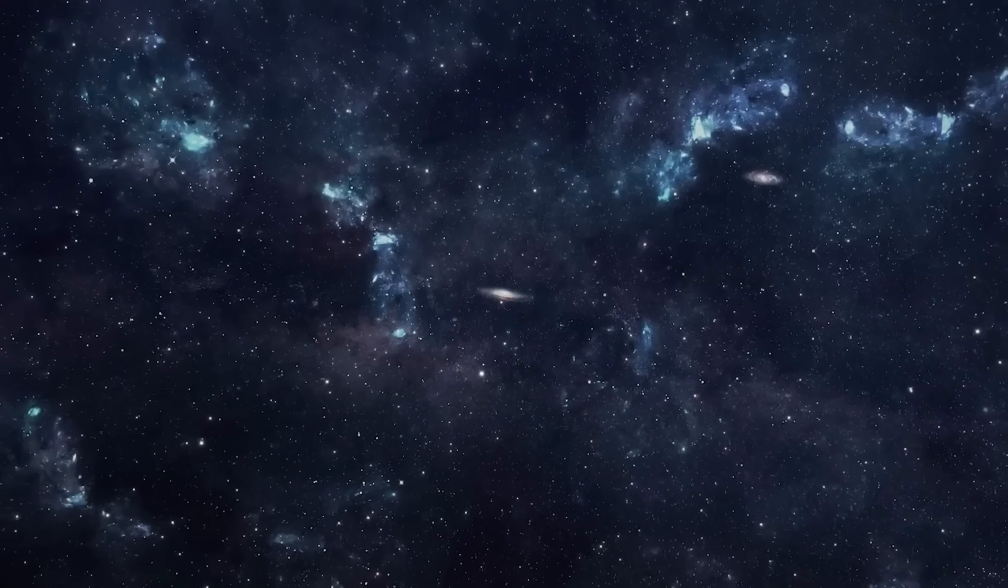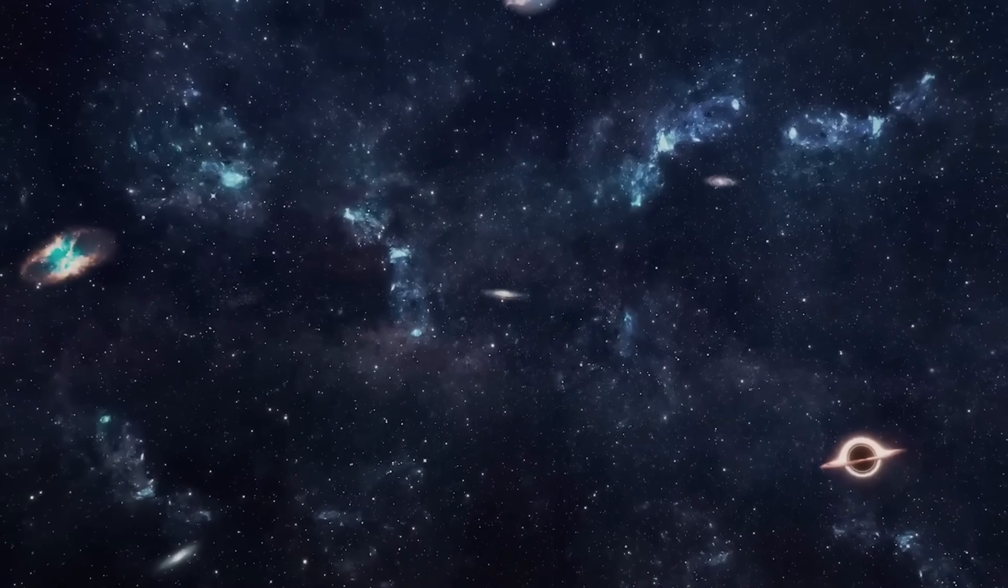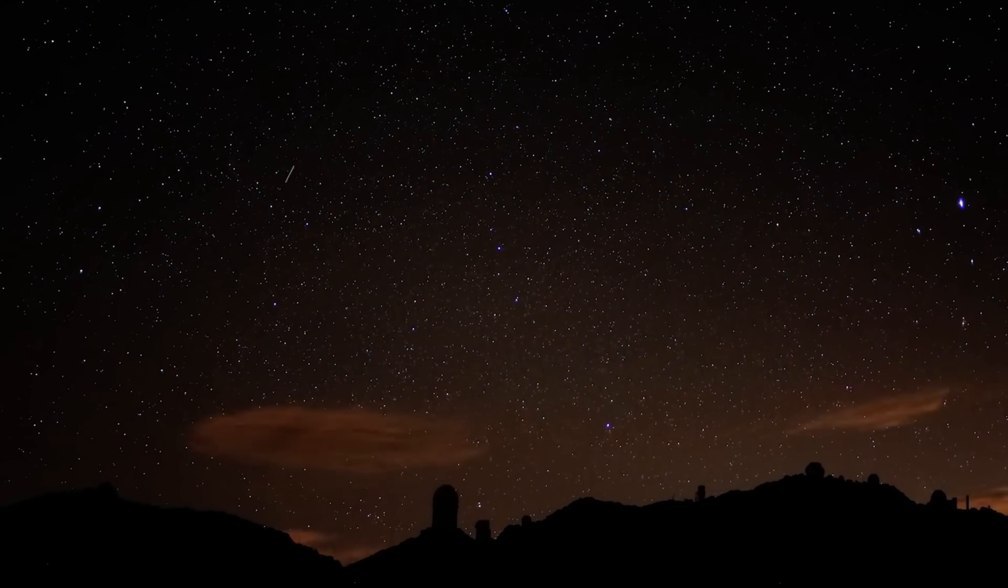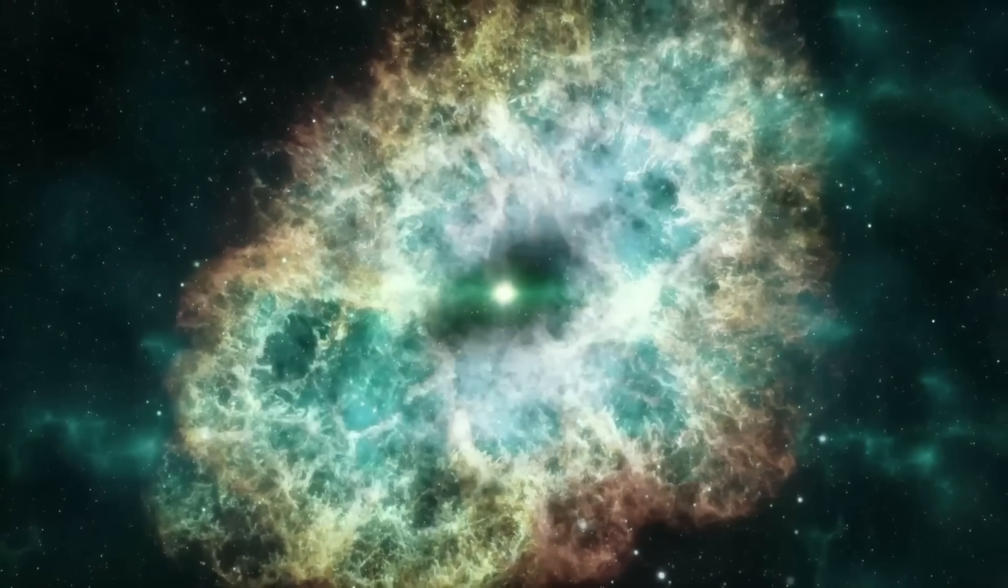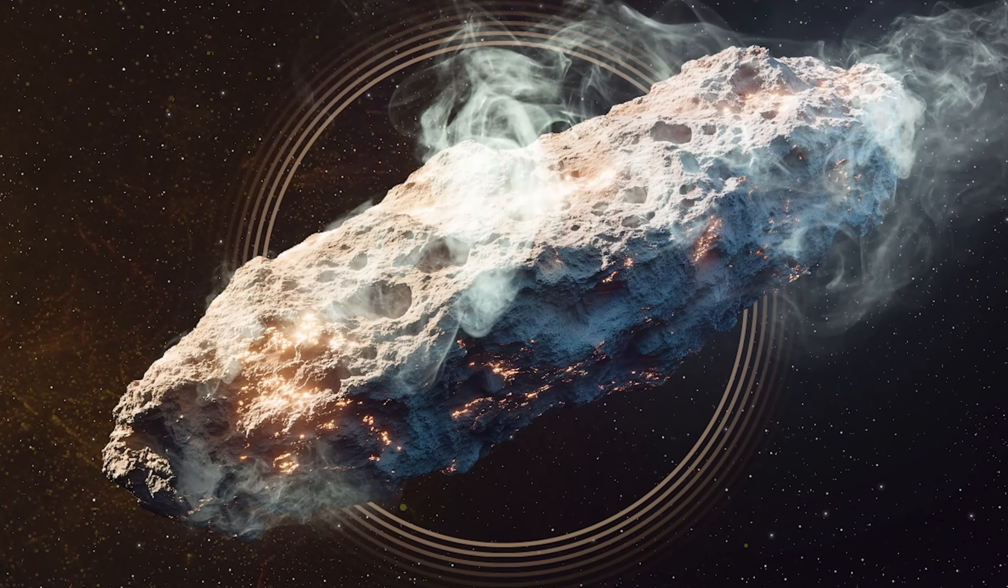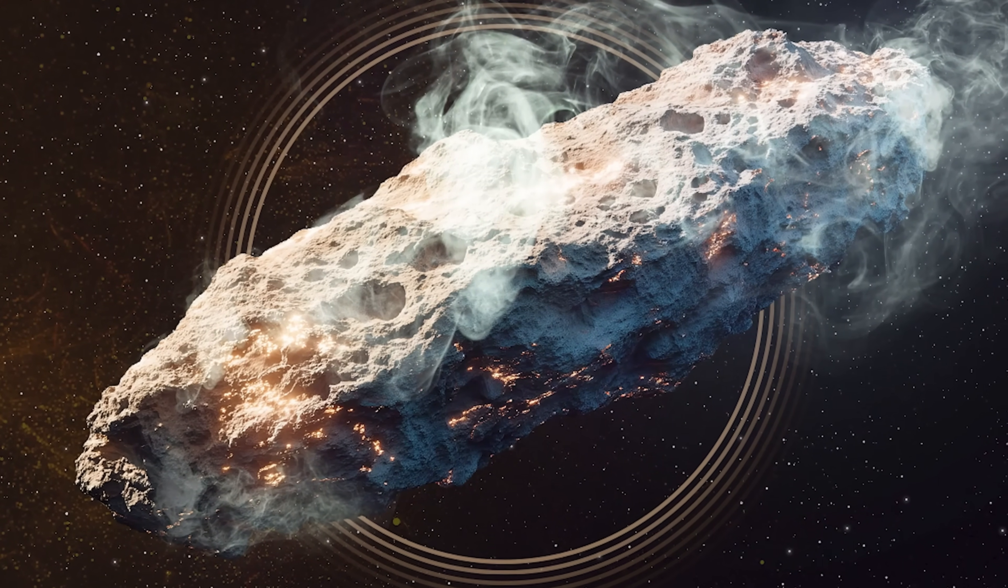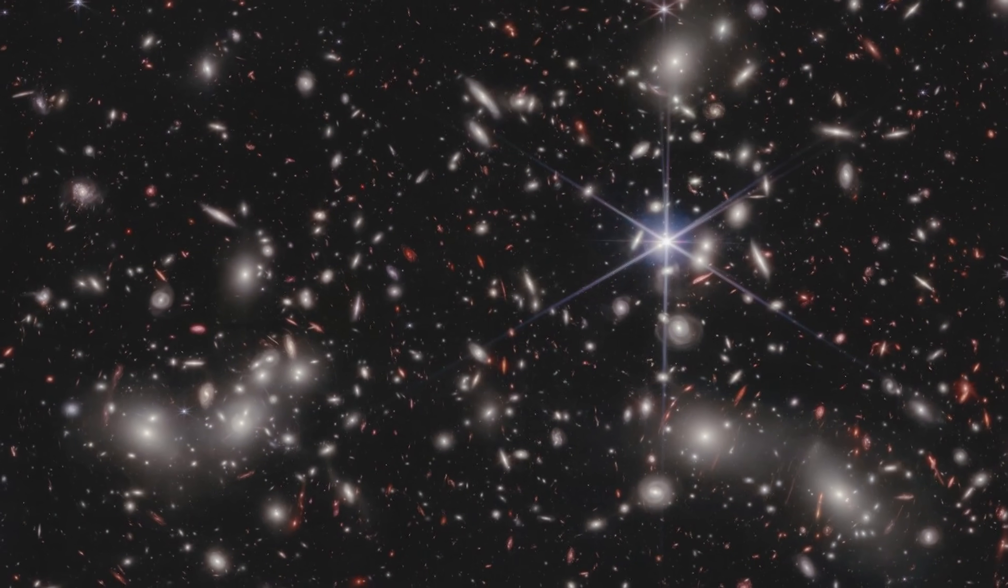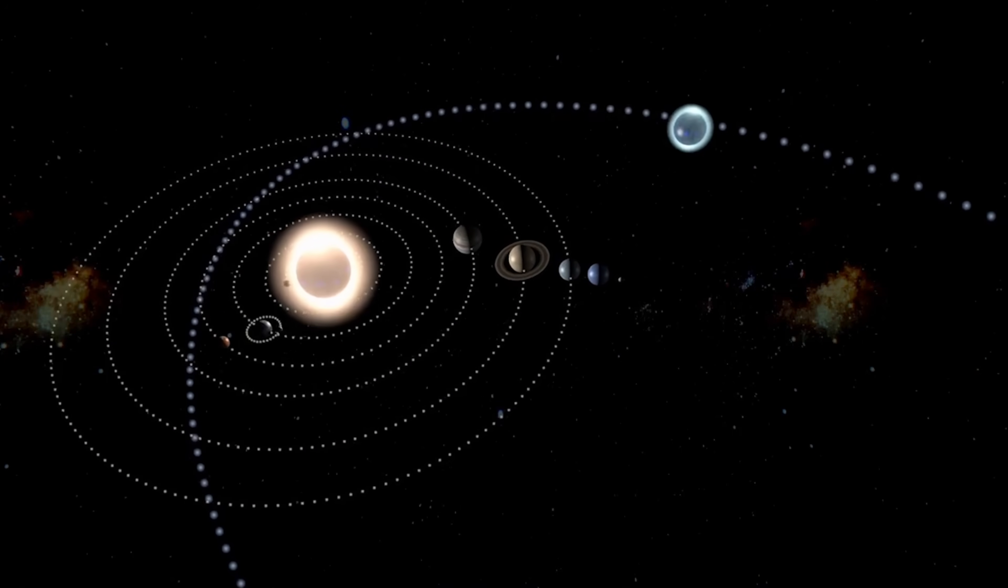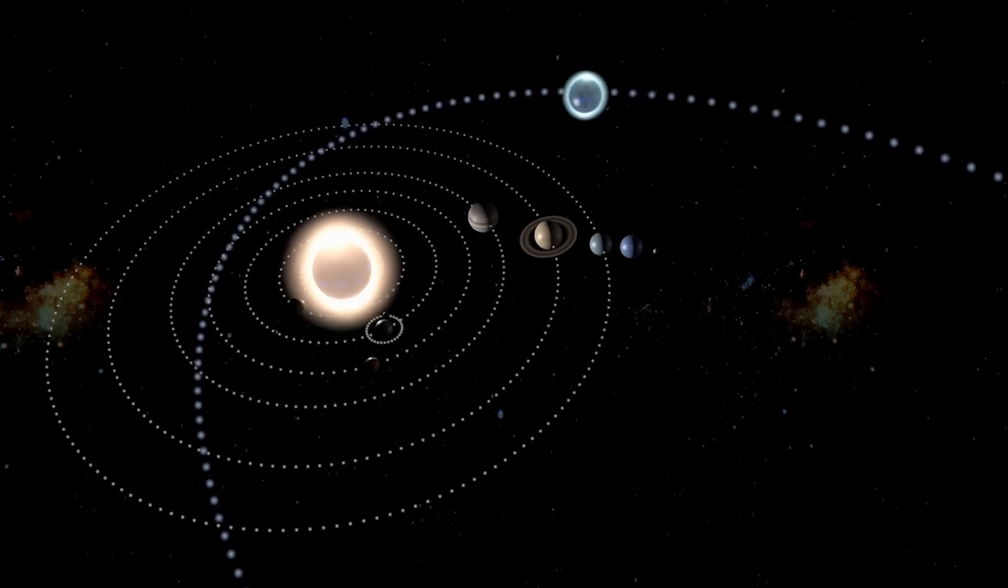From a scientific perspective, the object also underscores how much we still don't know about interstellar space. Are these visitors common? How diverse are they? What do they reveal about the environments that produce them? Every answer leads to new questions. In the coming years, astronomers hope to combine optical, infrared, and radio observations of 3I Atlas to refine its orbit and model its interaction with the solar wind. Some are even exploring the possibility of tracing its outbound trajectory to see whether it might pass near another star in the distant future, turning our solar system into just another waypoint on its endless journey.